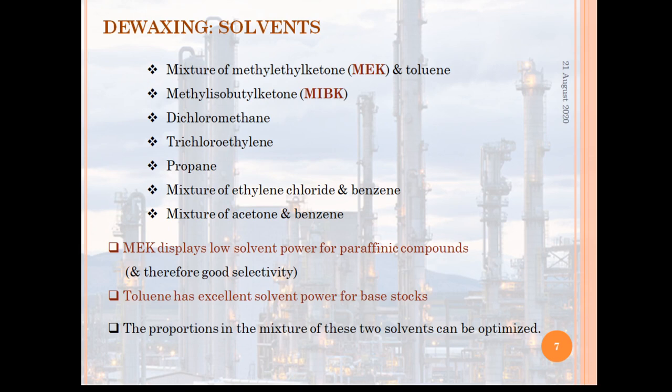Two principal solvents are generally used in the solvent de-waxing process: propane and ketone. Dichloroethane methyl is also used in some countries. The ketone process uses either a mixture of methyl ethyl ketone with methyl isobutyl ketone, or MEK with toluene. These solvents act as diluents for higher molecular weight oil fractions.